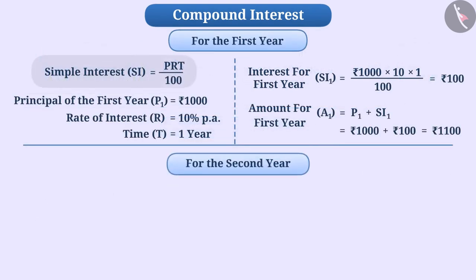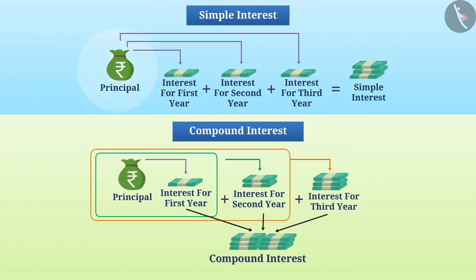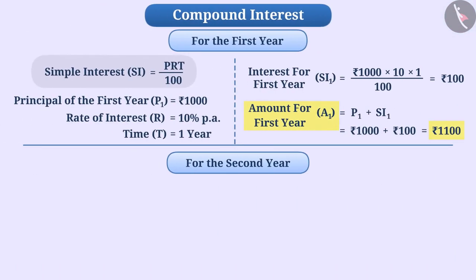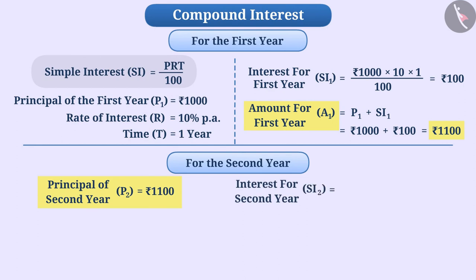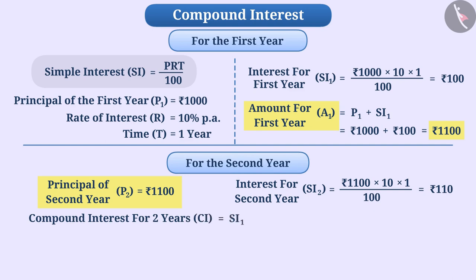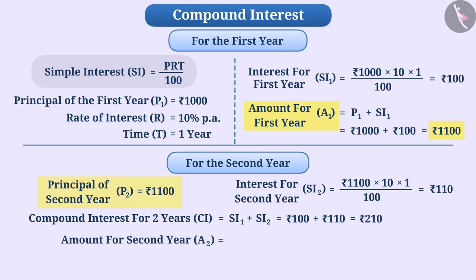Now let's calculate interest for the second year. In simple interest, the principal is the same each year, but in compound interest, the interest is calculated on the total amount of the previous year. So amount A1 of the first year becomes principal P2 for the second year. Simple interest for the second year SI2 is equal to 1100 × 10 × 1 ÷ 100, which equals rupees 110. Compound interest for both years CI equals SI1 plus SI2, which is rupees 100 plus rupees 110, equals rupees 210.